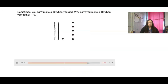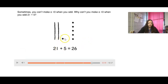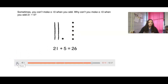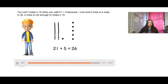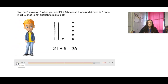You can't make a 10 when you add. Why can't you make a 10 when you add 21 plus 5? Well, I only have 1 one here. And if I add 1, 2, 3, 4, 5 to it — 5 plus 1 is 6. Is that a 10? No, I don't have enough to make a 10 yet. You can't make a 10 when you add 21 plus 5 because 1 and 5 ones is 6 ones in all. 6 ones is not enough to make a 10.